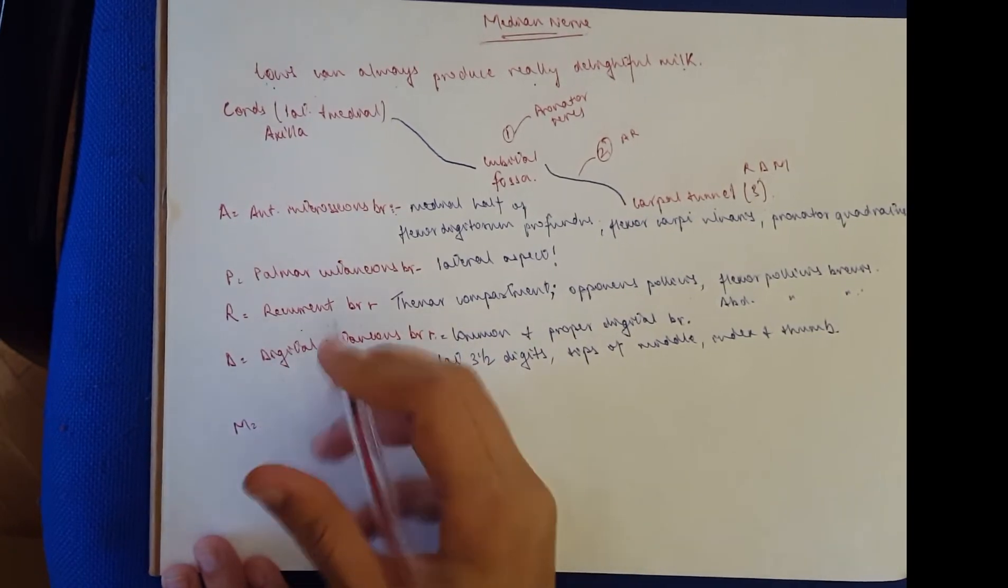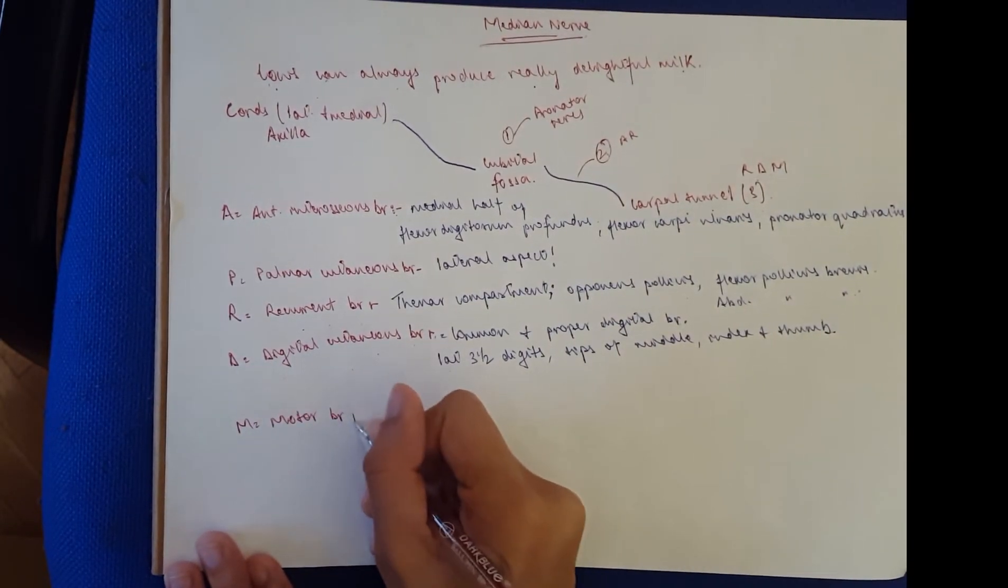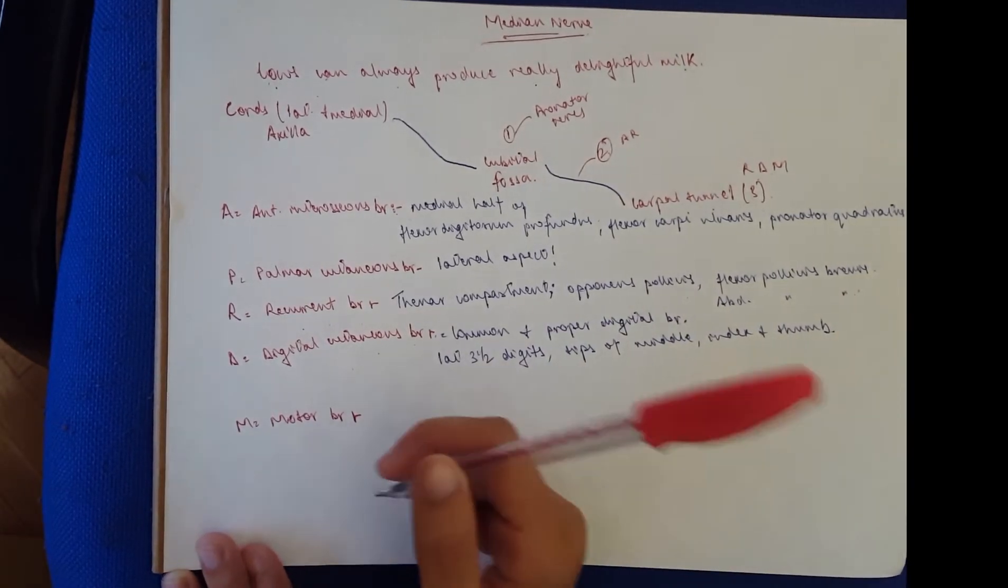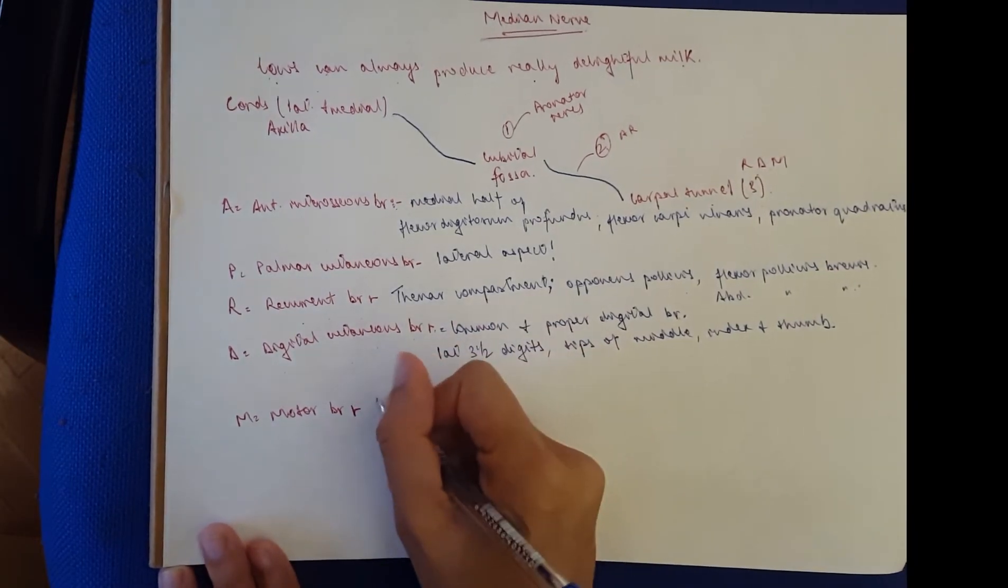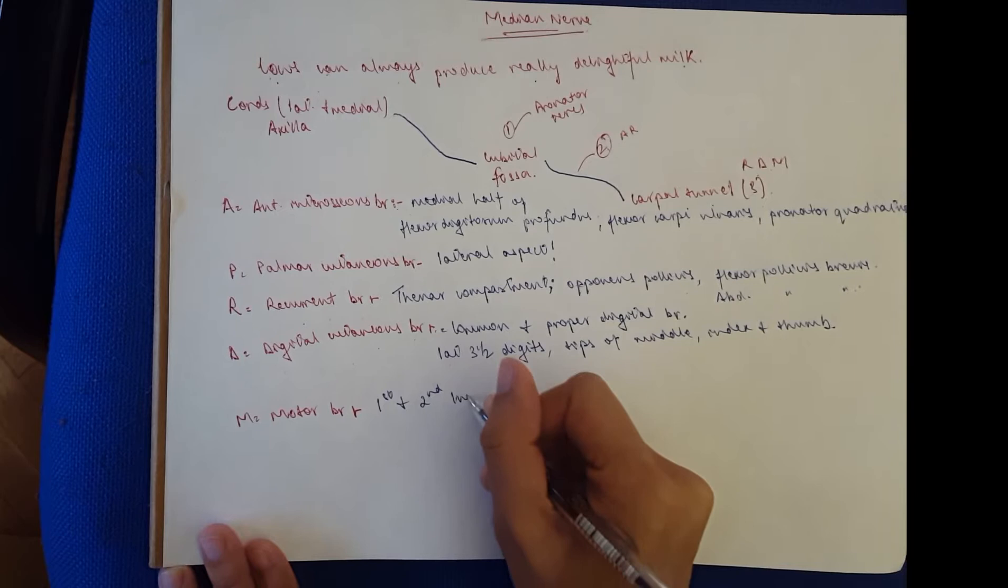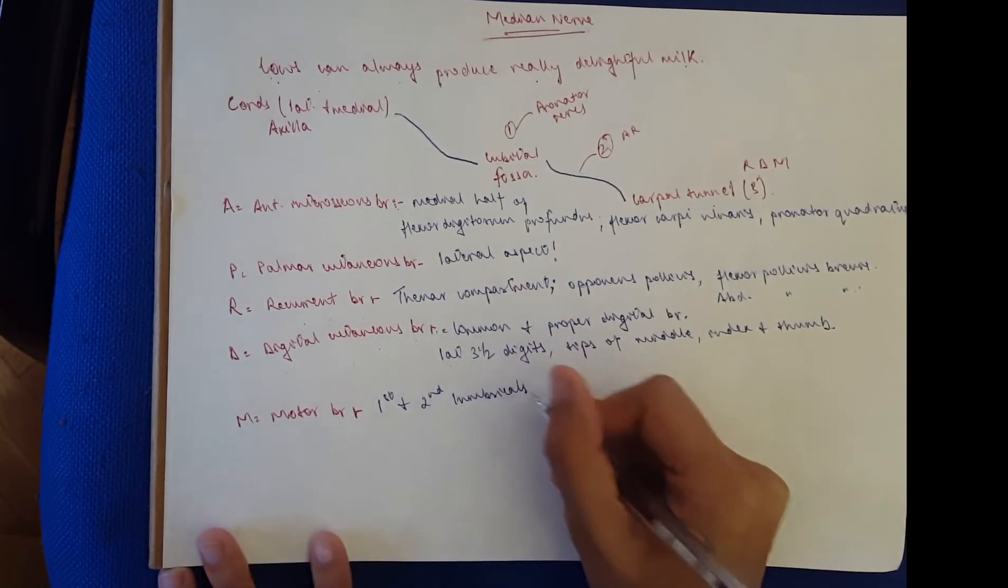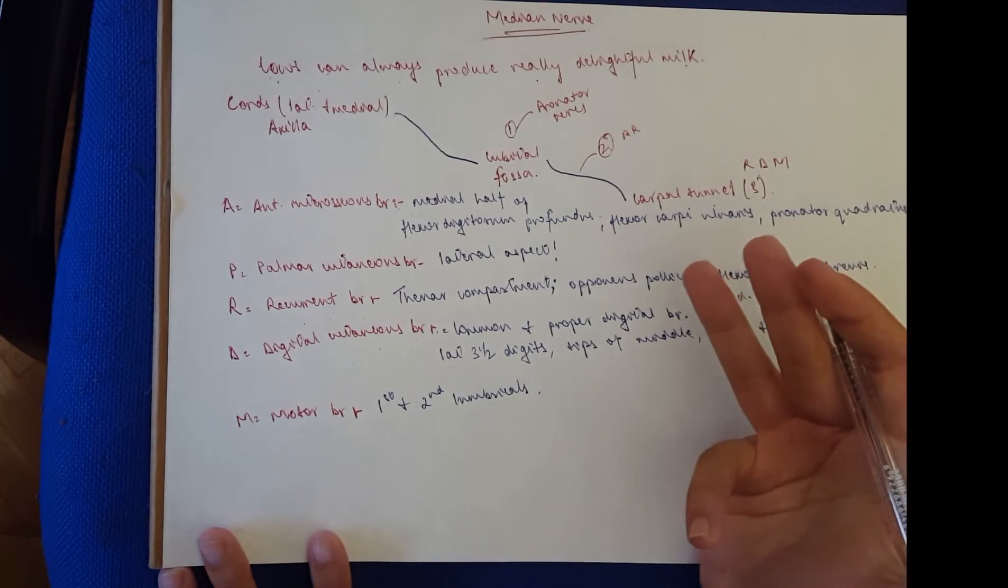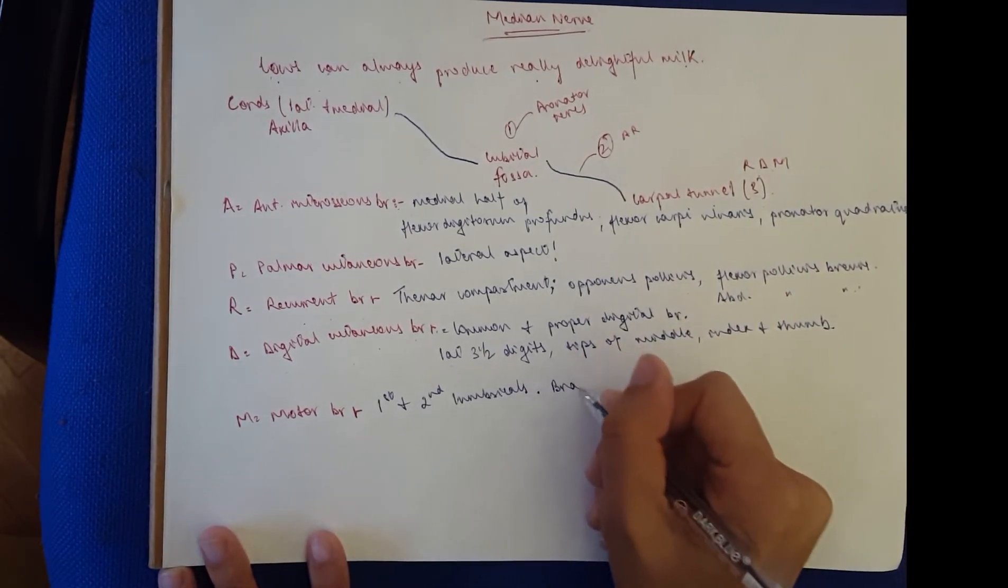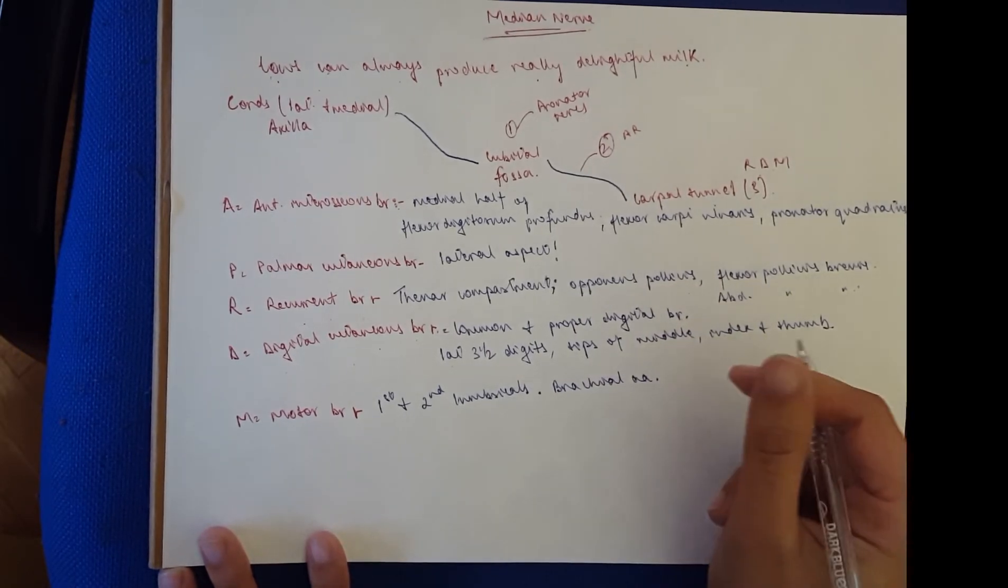Then we move on to our last one, which is the motor branch or motor innervation. That supplies quite a lot of muscles. It supplies the first and second lumbricals of the hand. Then you've got a vascular branch that goes to the wall of the brachial artery.